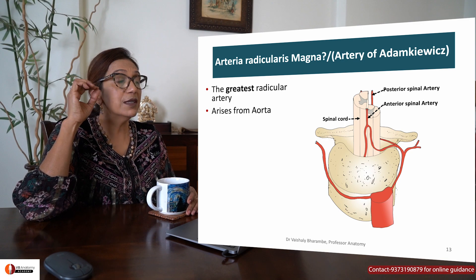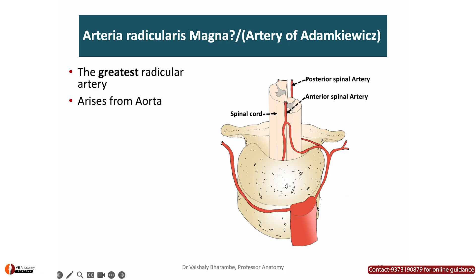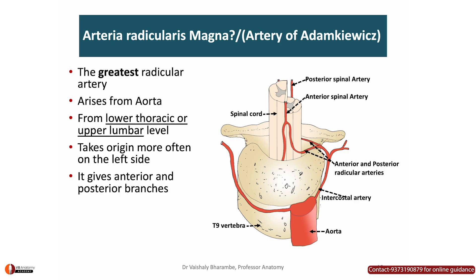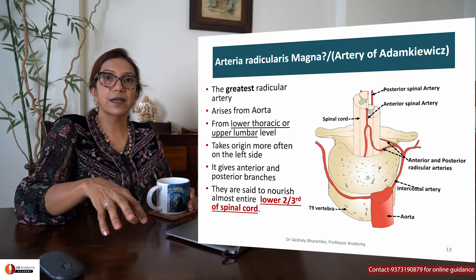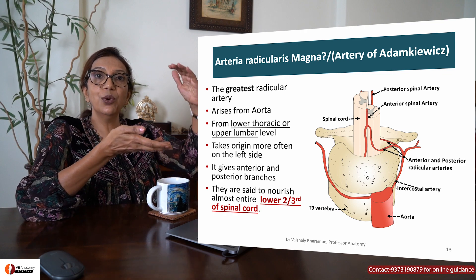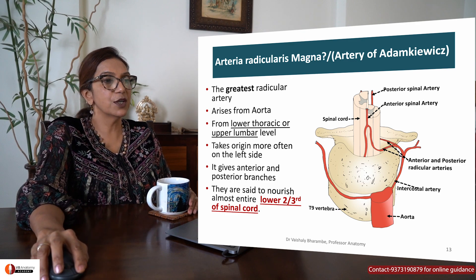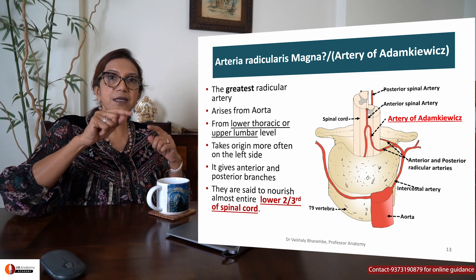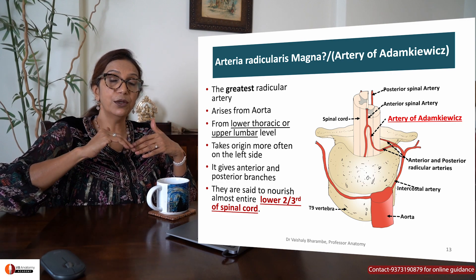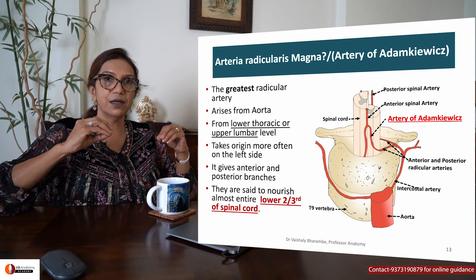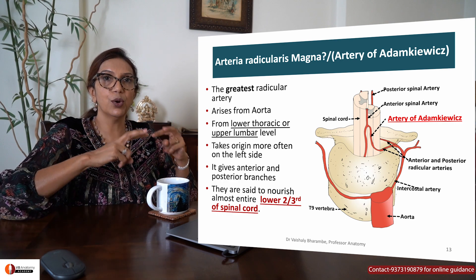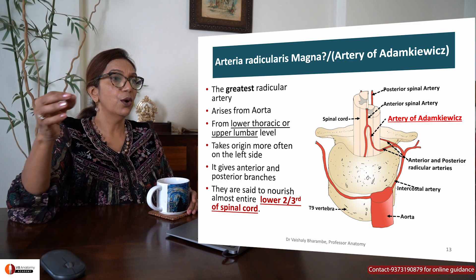One last important artery: arteria radicularis magna, also called the artery of Adamkiewicz. This artery arises directly from the aorta on the left side, usually at the level of lower thoracic or upper lumbar region. It enters through the intervertebral foramen and divides into anterior and posterior radicular arteries, supplying the lower two-thirds of the spinal cord. This is a very common MCQ question.